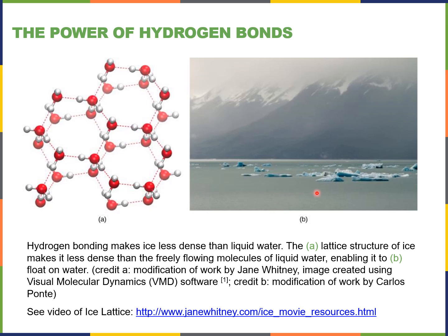If you look at liquid water in the ocean or sea, the water molecules may be cold but they're still in movement, so you have a liquid. Whereas with ice, the water molecules have started to line up, forming a geometric shape where all the hydrogen bonds are a set distance apart. The water molecules slow down their vibration and movement, and you now have something solid.